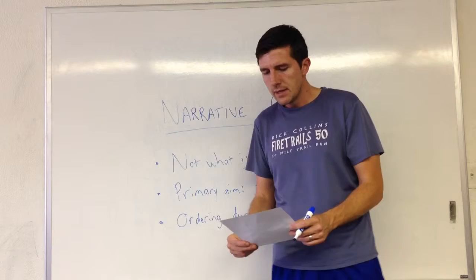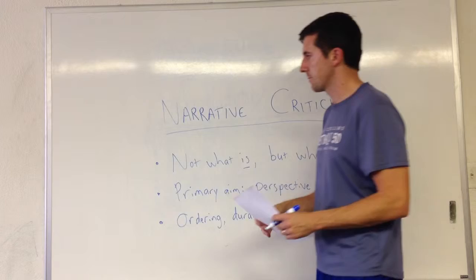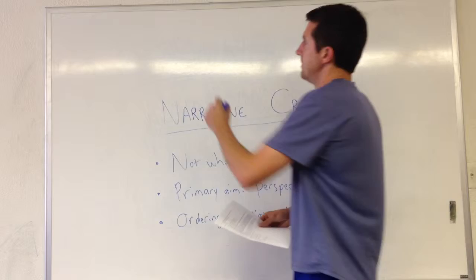Second, duration and frequency of events. How long does the event take, and the frequency, how often does this occur? Now there are several ways in which the narrative can interact with the actual chronology. I would give five.